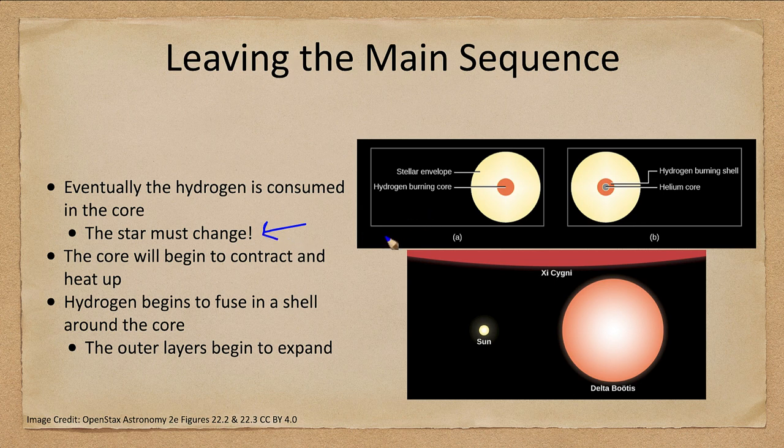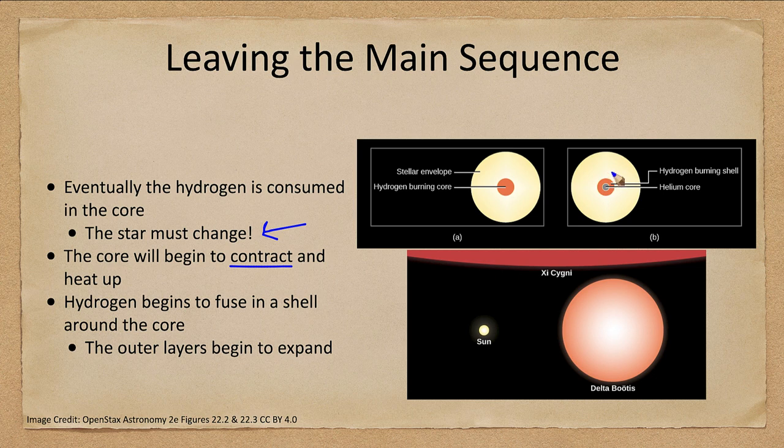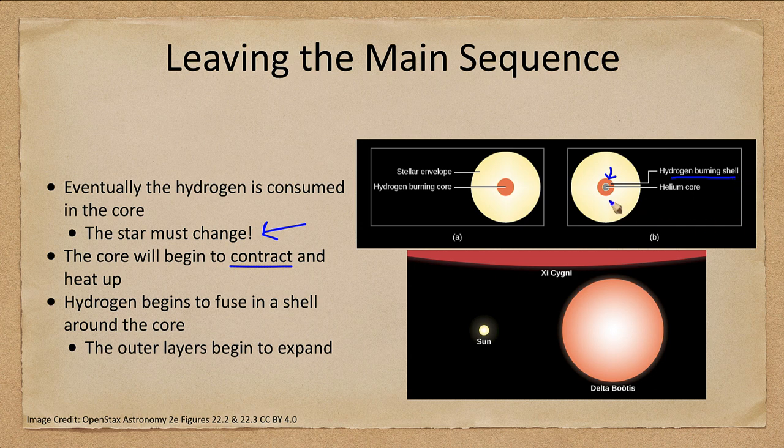It no longer has an energy source in its core. So the core contracts and heats up, and as it heats up the area around it becomes able to burn hydrogen. So we have a hydrogen burning shell around a helium core which is inert at this point.